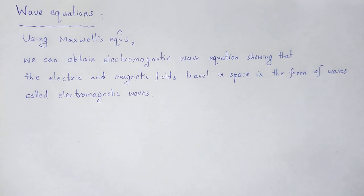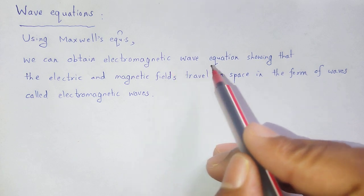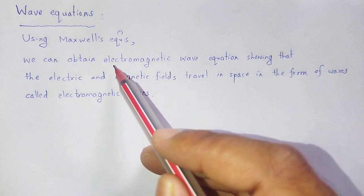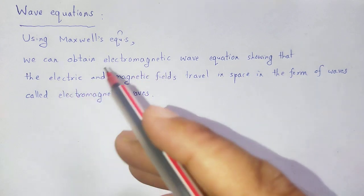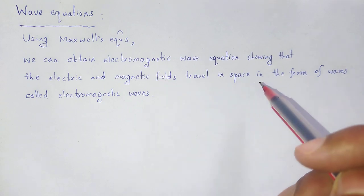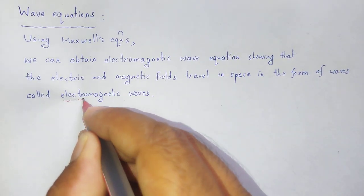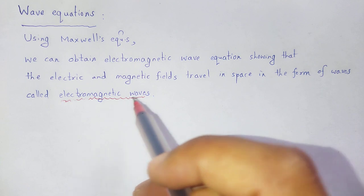We can derive wave equations by using Maxwell's equations. When we use Maxwell's equations, we can easily obtain the electromagnetic wave equation. That electromagnetic wave equation shows that it is a combination of electric and magnetic fields. The electric and magnetic fields travel in space in the form of waves, and those waves are called electromagnetic waves. Let us derive the wave equation for electromagnetic waves.